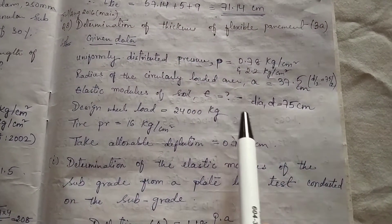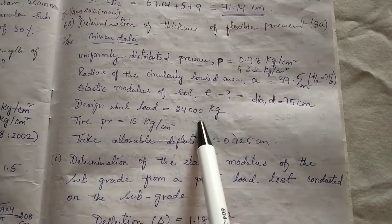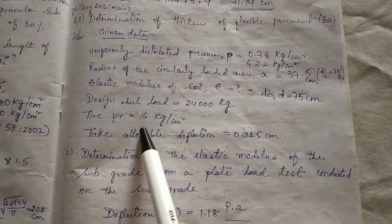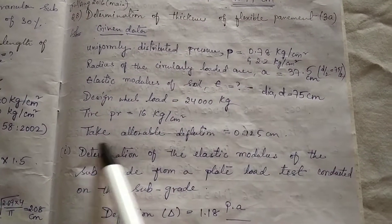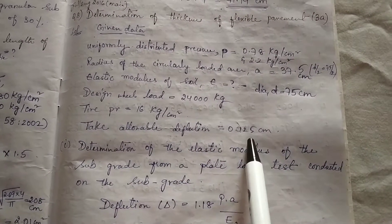Diameter is given as 75 centimeter. Design wheel load is equal to 2400 kg. Tire pressure is 16 kg per centimeter square. Take allowable deflection as 0.125 centimeter, which is given in the question itself.